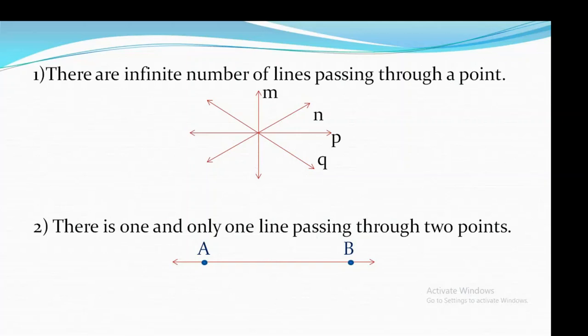The second postulate: there is one and only one line passing through two points. So from two given points, you can draw only one single line. That is Euclid's second postulate.